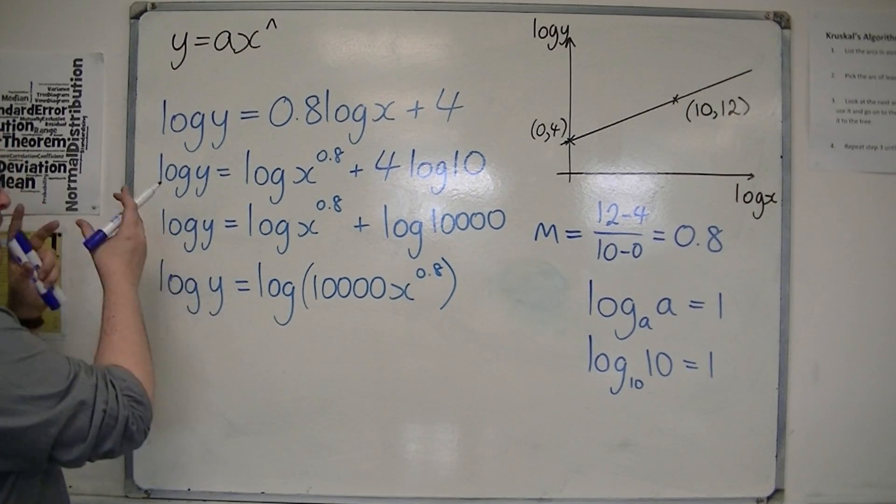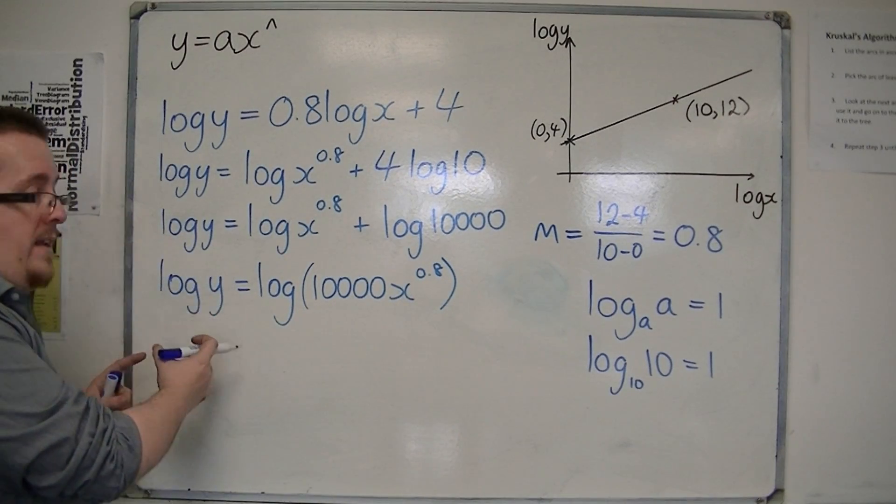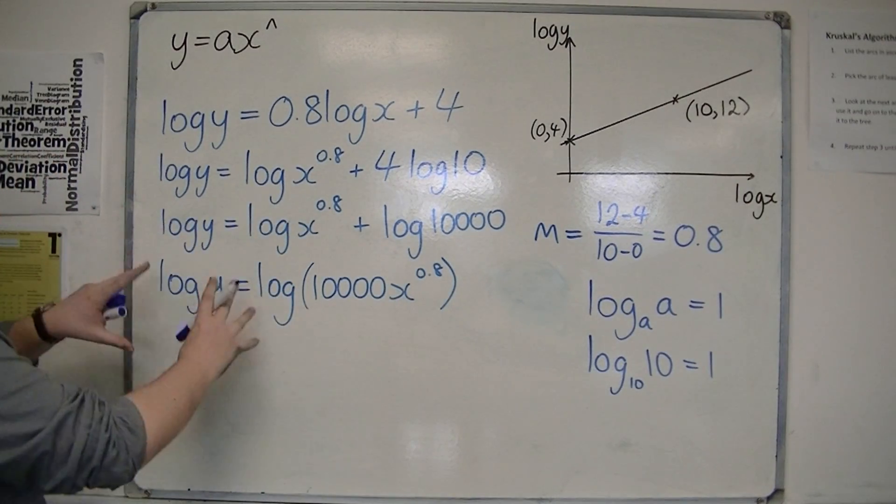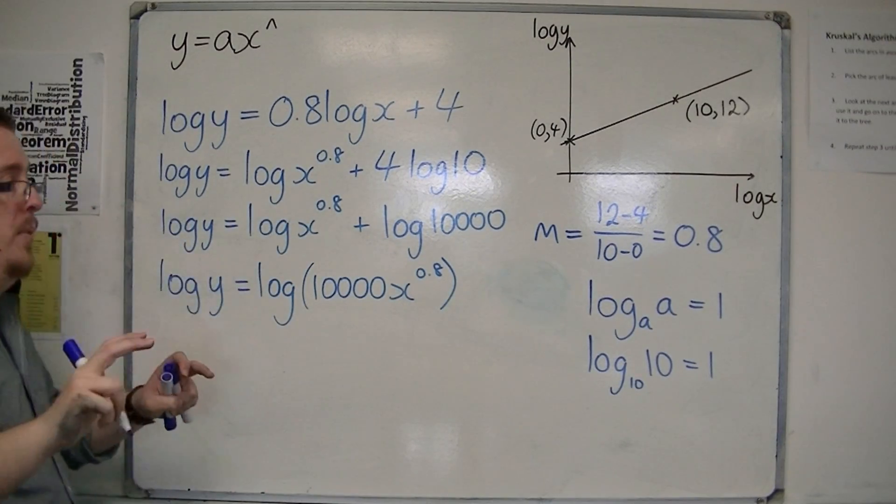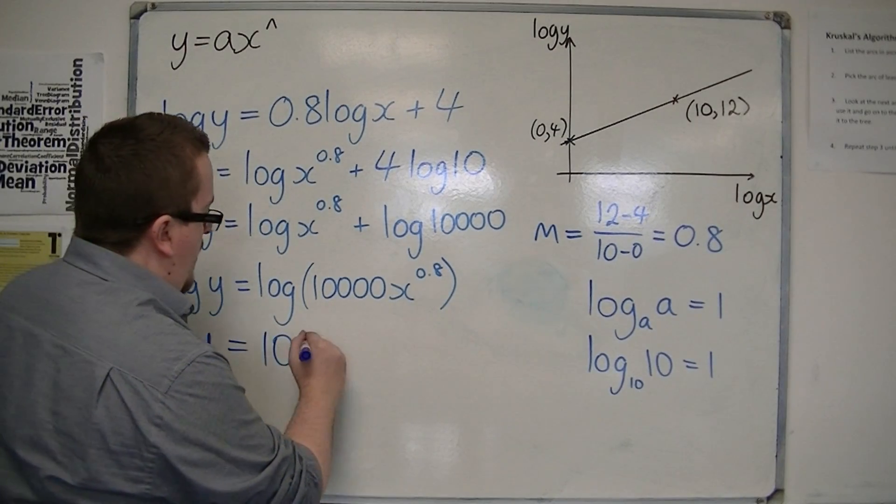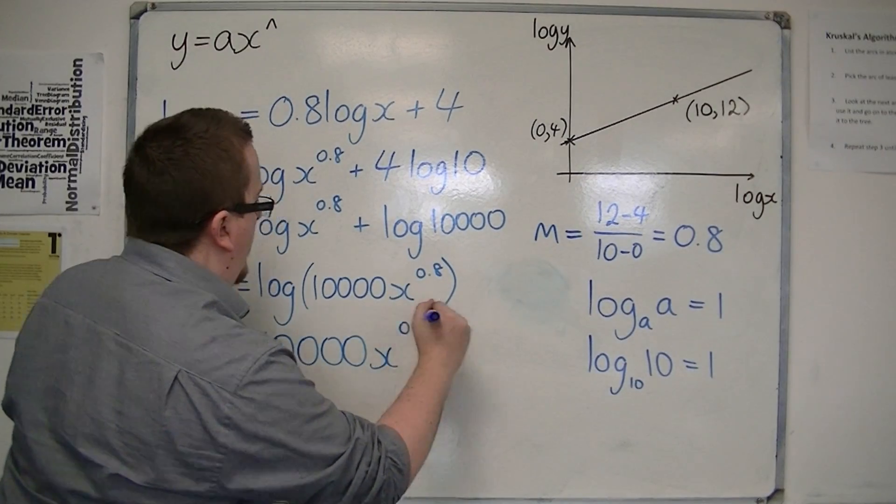And now, because I've got log of one base is equal to log of the same base as something else, the two logarithms can be taken away. I can exponentiate both sides. So, y is equal to 10,000 x to the 0.8.